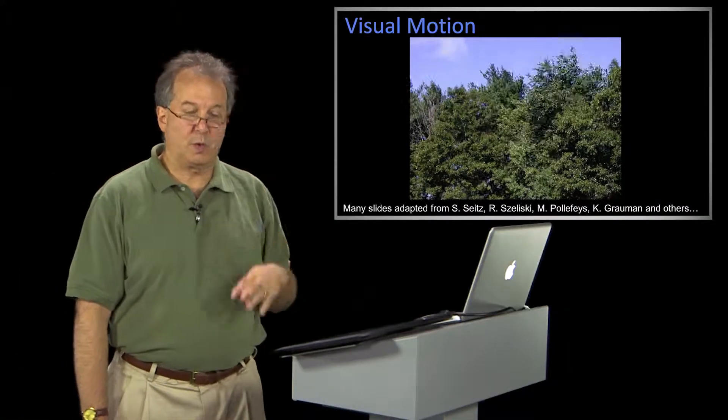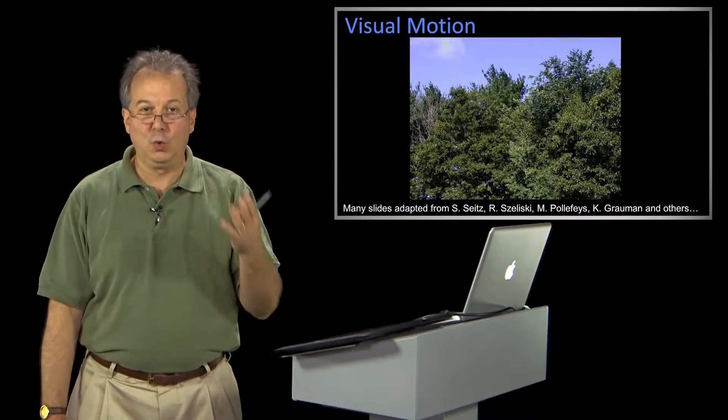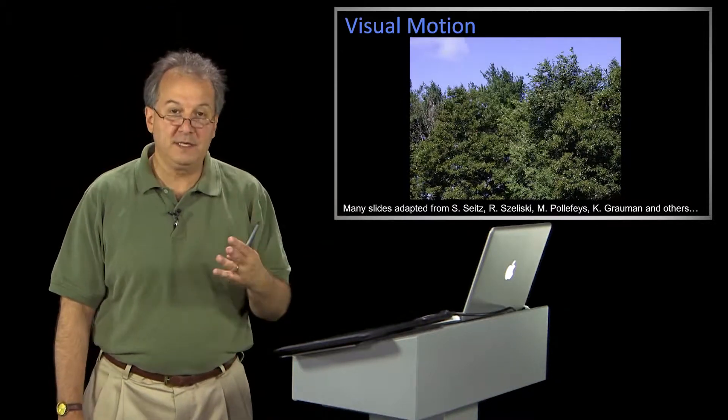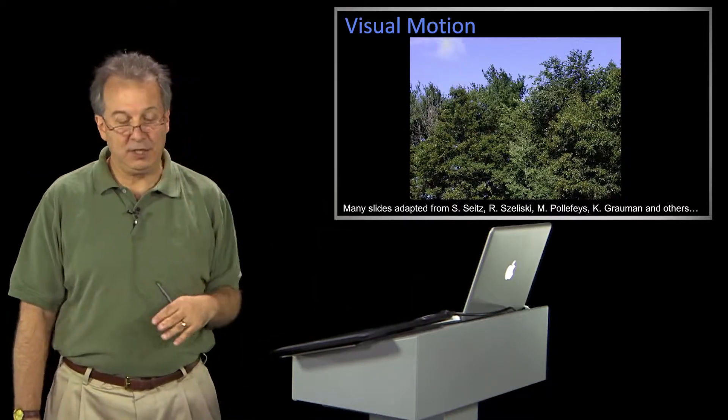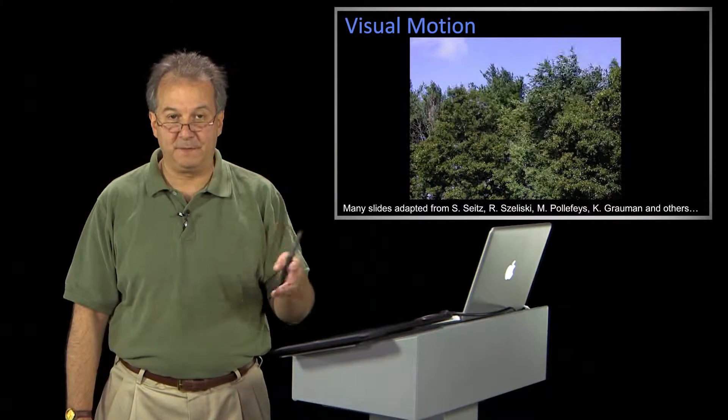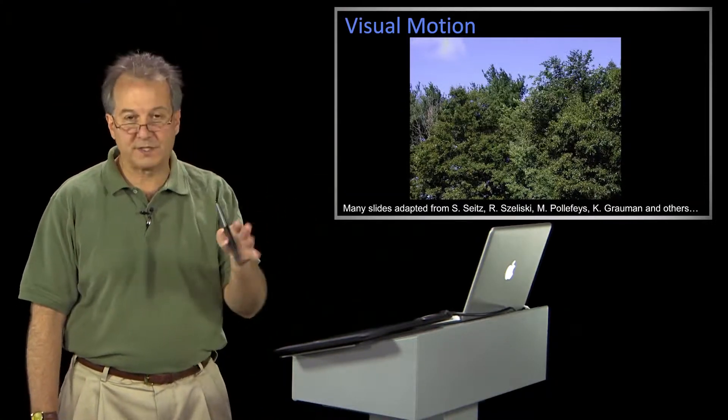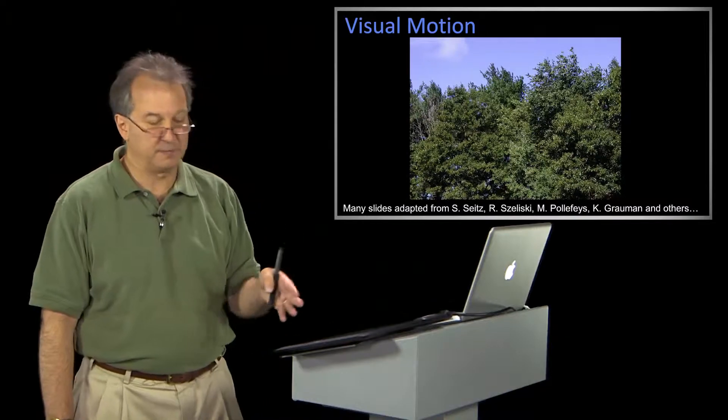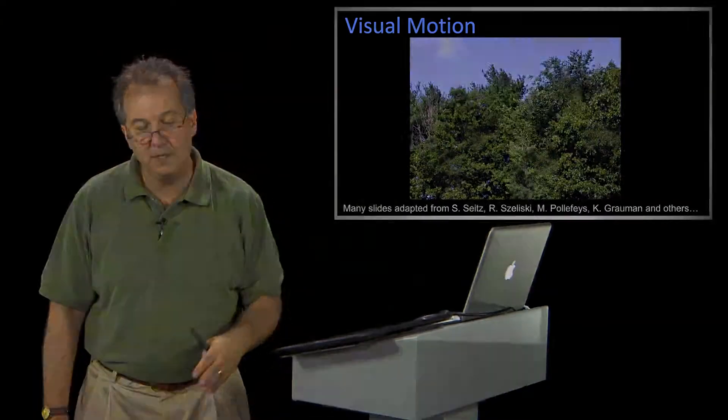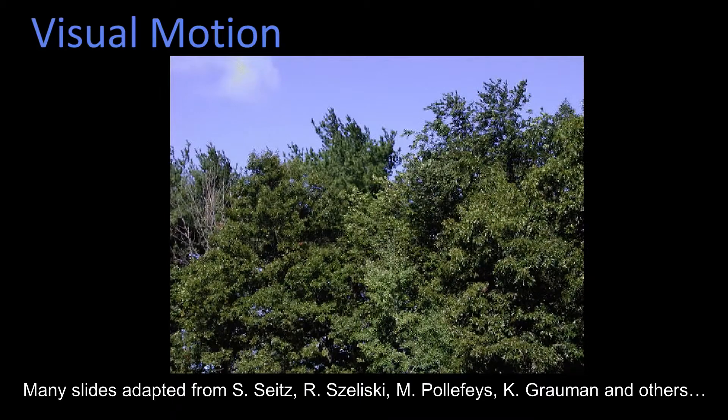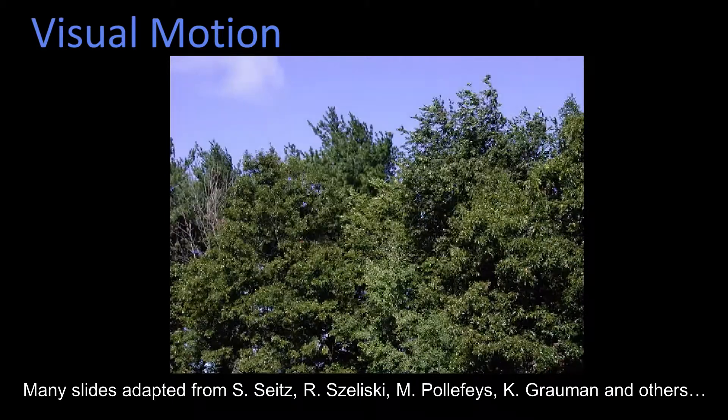In computer vision, we also want to deal with motion. But what's kind of cool is, nothing is actually moving. What you're seeing here is a repeated GIF image. I've made it coarsely sampled from some slides stolen from folks listed below, so that you can see it's actually a sequence of static frames.